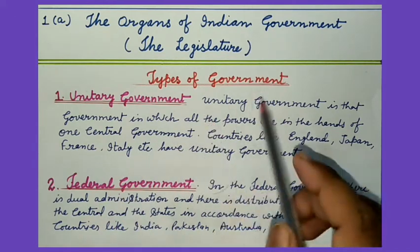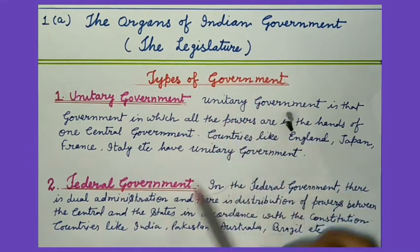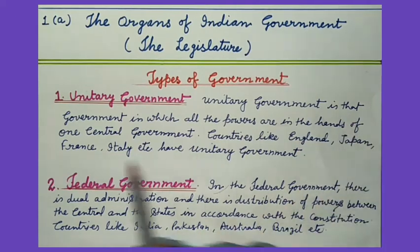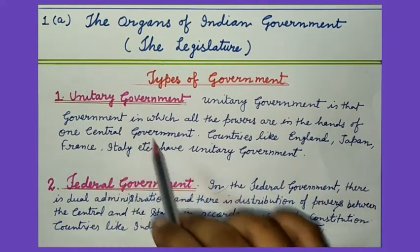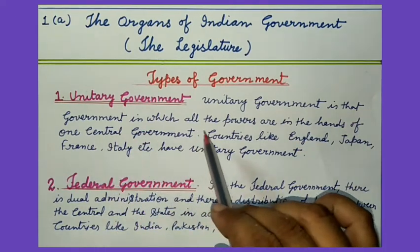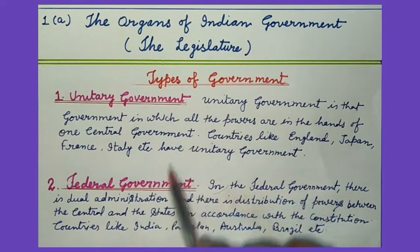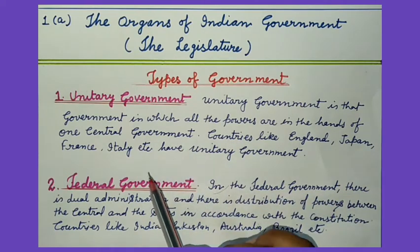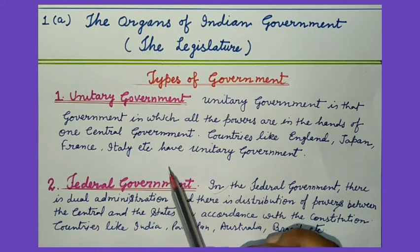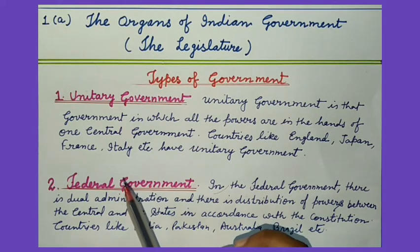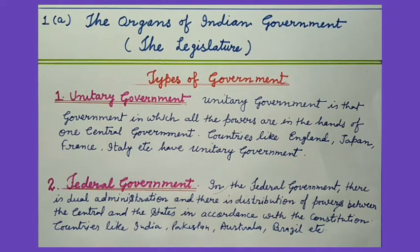First, we will discuss the unitary government. A unitary government is one in which all the powers are in the hands of one central government. The powers being used by the local government are delegated to them by the central government.